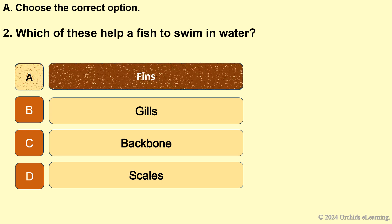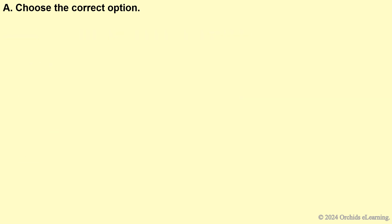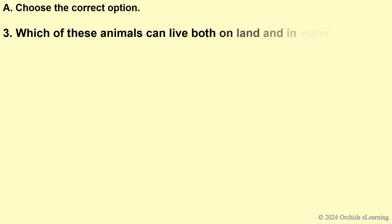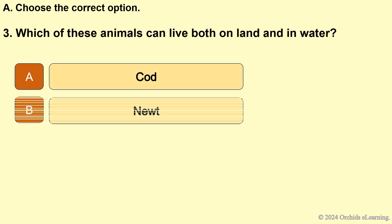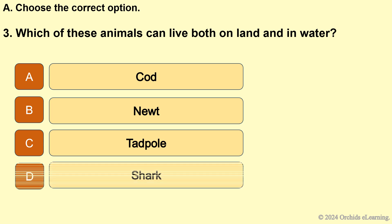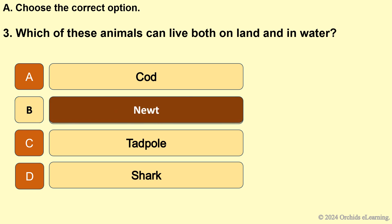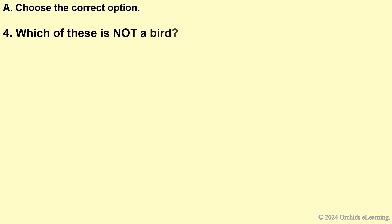Answer: A — fins. Which of these animals can live both on land and in water? Answer: B — newt. Which of these is not a bird?